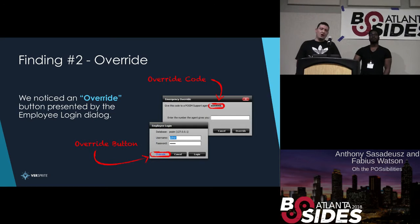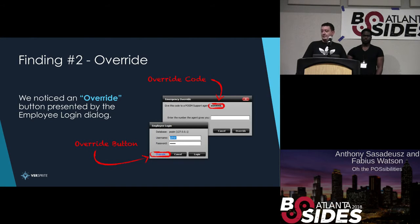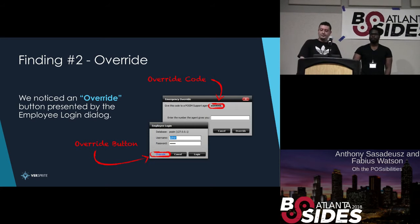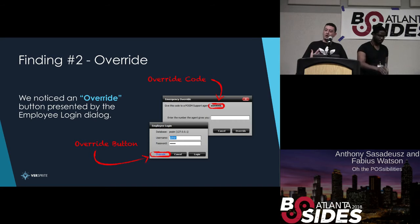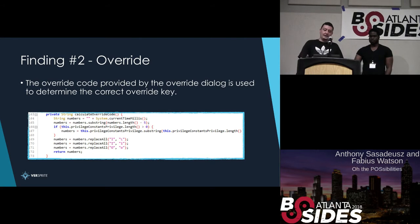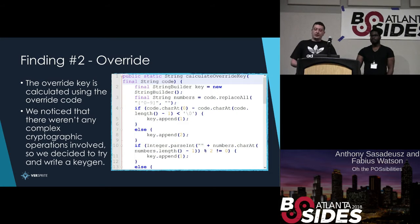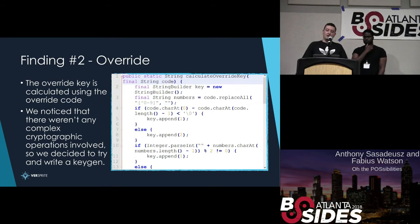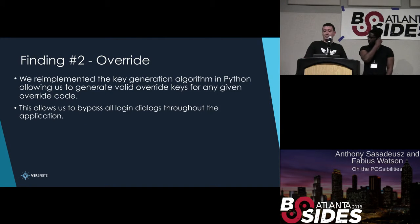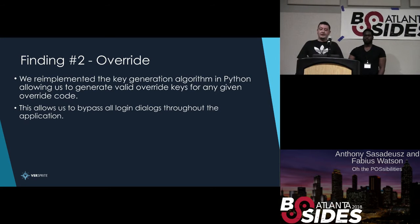Our next finding with Possum Evo we call Override. On the login screen, we noticed an override button in the bottom left corner. Clicking it generates an override code — you're expected to contact an agent who gives you an override key to bypass login. We investigated and found the override code was generated simply. More interestingly, the algorithm to generate the real key wasn't complex at all — no crypto involved, just basic mathematics. So we ported the logic to Python, wrote a key generator, and this allows us to bypass all logins. Here's a demo.